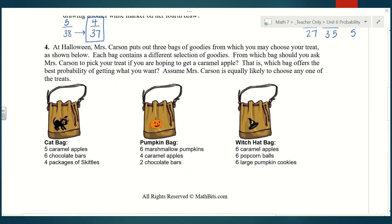Number four. At Halloween, Mrs. Carson puts out three bags of goodies from which you may choose your treat, as shown below. Each bag contains a different selection of goodies. From which bag should you ask Mrs. Carson to pick your treat if you're hoping to get a caramel apple? That is, which bag offers the best probability of getting what you want? Assume Mrs. Carson is equally likely to choose any one of the treats. If we look at the cat bag, I can see there are 5 caramel apples, which is what I want. So my probability is 5 out of the total number of treats in that bag, which is 15.